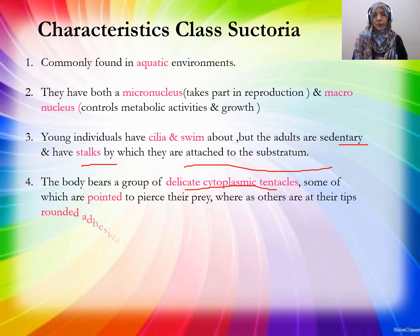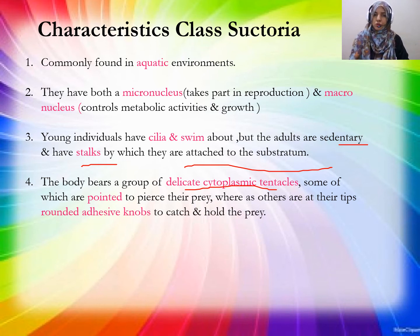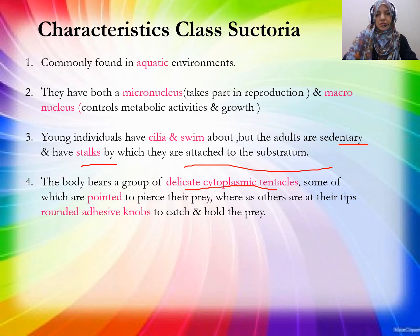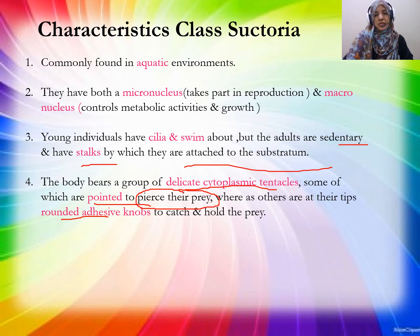When they need food, the tentacles help them capture it. There are two types of tentacles: pointed ones that pin prey, and rounded adhesive knobs that hold and catch prey. The pointed tentacles inject toxic material to paralyze the prey.